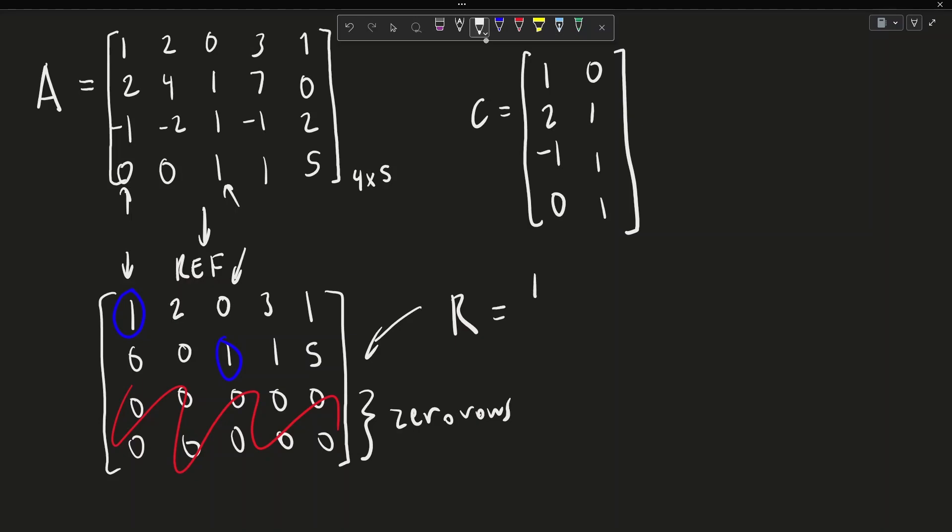And so R is constituted of [1, 2, 0, 3, 1] and [0, 0, 0, 1, 1, 5].